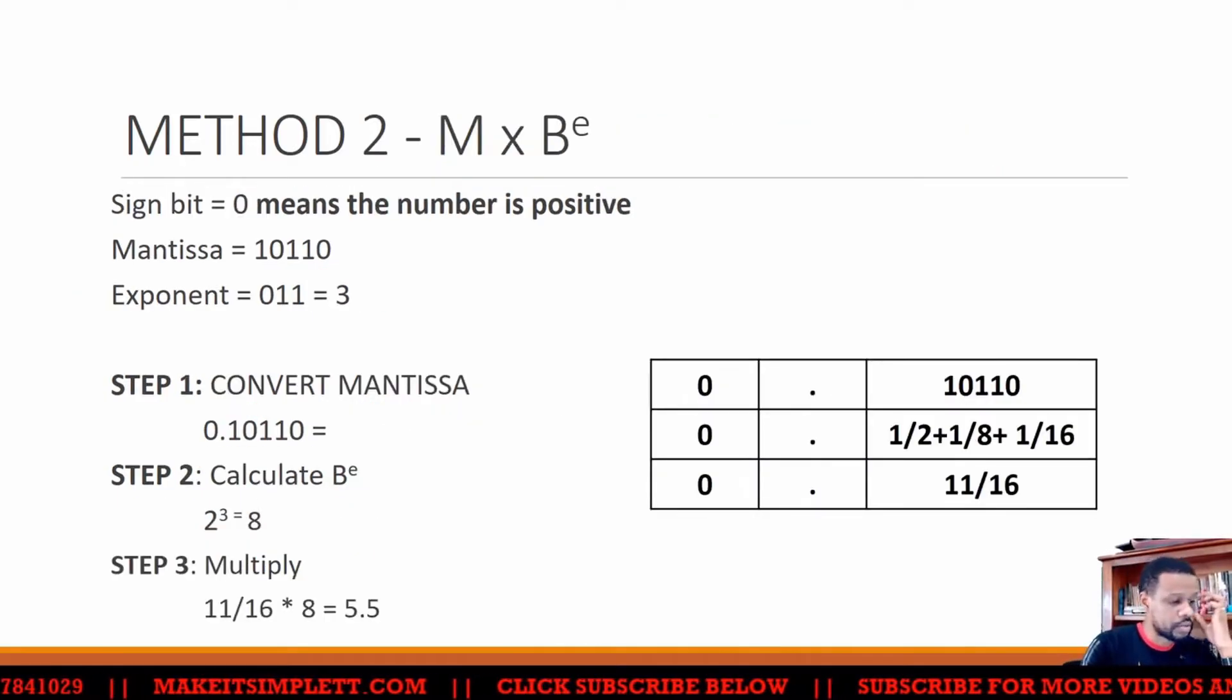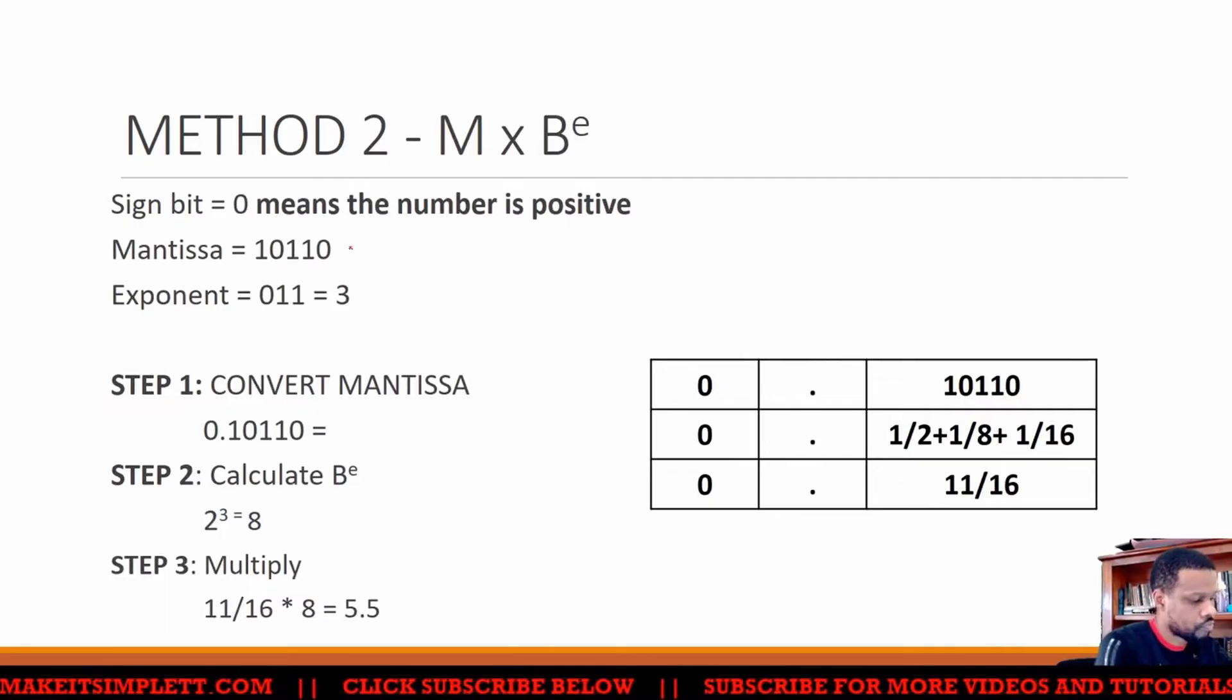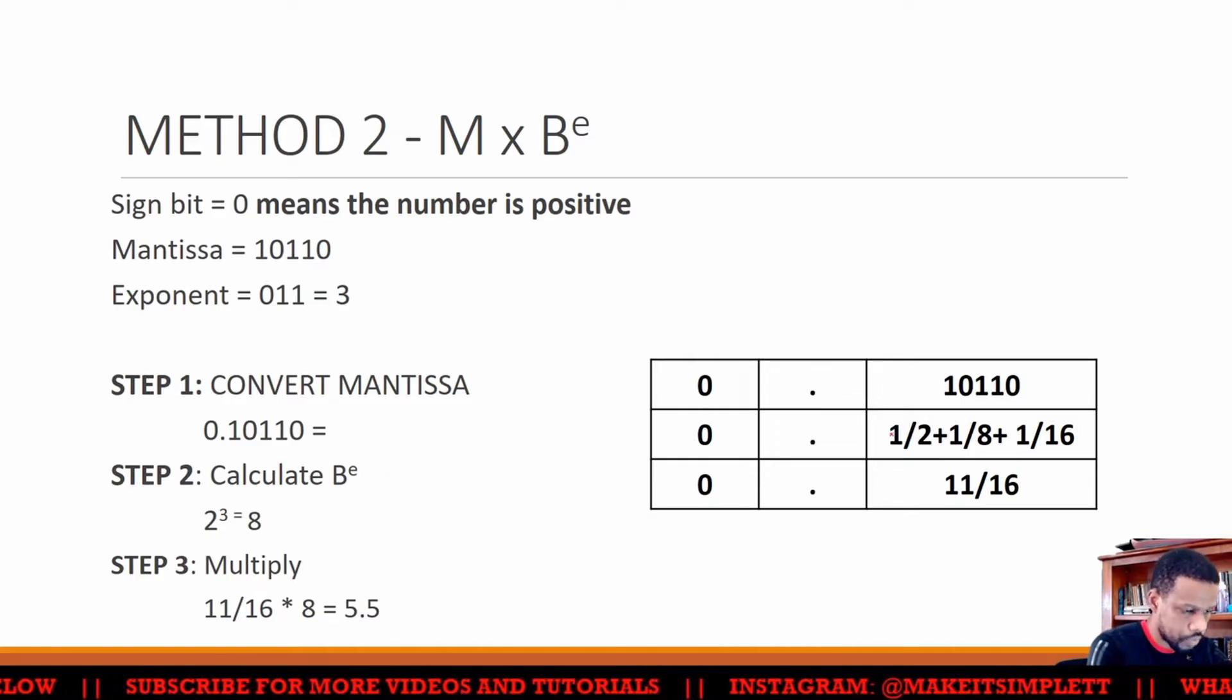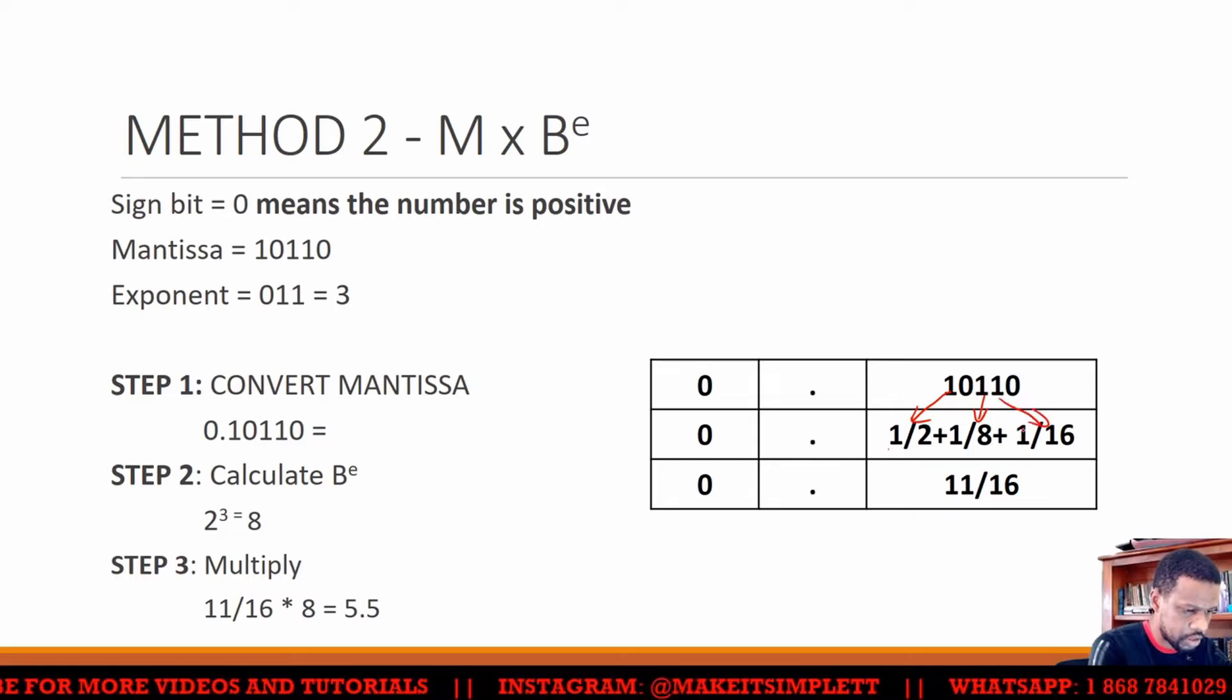The next way to do it is M by B to the E. So you convert the mantissa to a number, which will be, this one here will translate to a half. This one here will translate to 1/8. This will translate to 1/16. And then you add it all up and you'll get 11/16.